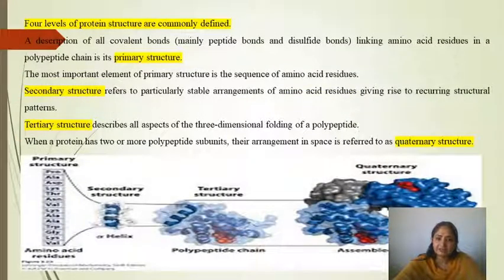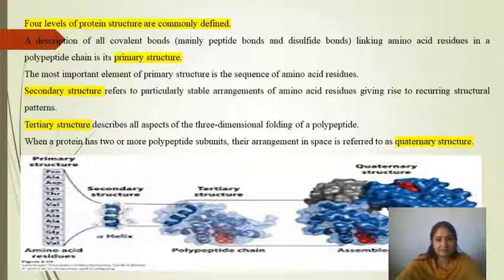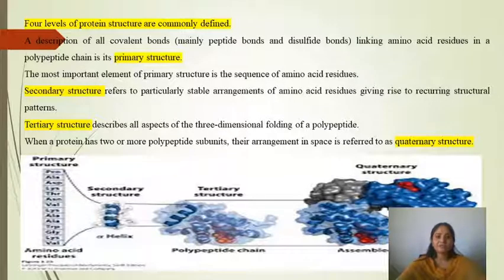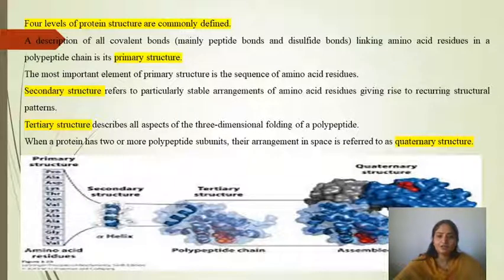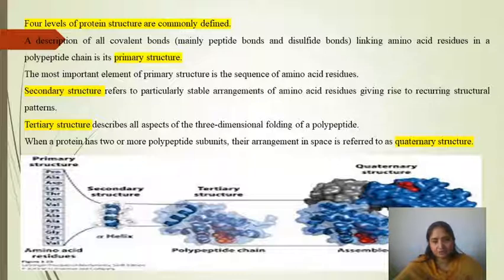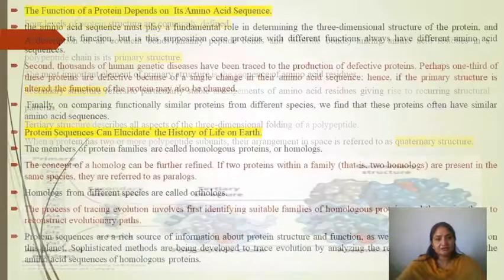Regarding levels of protein structure, if we talk about the structure of a protein, we divide it into four parts: primary structure, secondary structure, tertiary structure, and quaternary structure. Primary structure depends on the amino acid sequence. Secondary structure refers to a special, stable arrangement of the chain. Tertiary structure involves the folding of secondary structures. Quaternary structure refers to two or more polypeptide chains connected together.